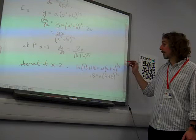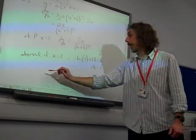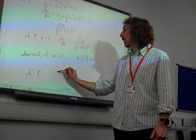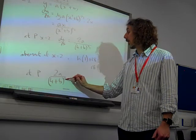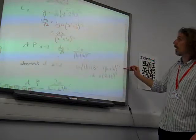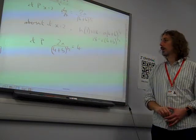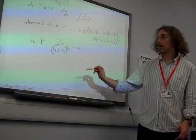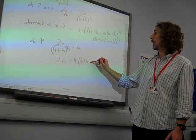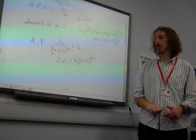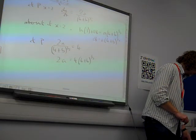We've got these two statements for dy by dx at P. They are equal. So at P, 2a over (4 plus b) to the half is equal to 4. Giving us an equation there that says that 2a is 4 lots of (4 plus b) to the half. That's the two equations that we're looking for.